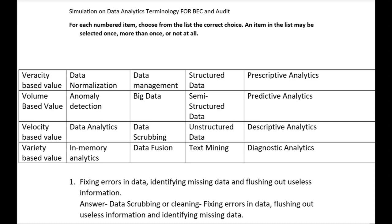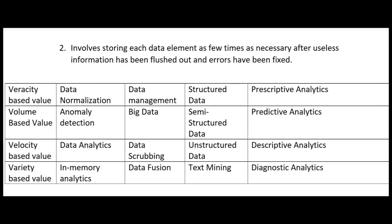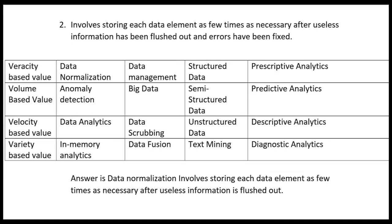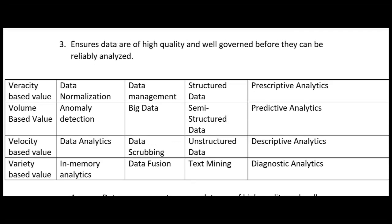Number two involves storing each data element as few times as necessary after useless information has been flushed out and errors have been fixed — that is data normalization. So first we clean the data, we scrub it, and then data normalization involves storing each data element as few times as necessary.